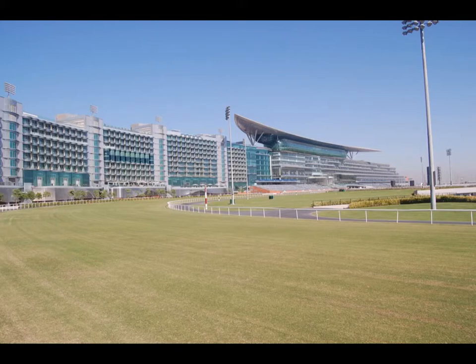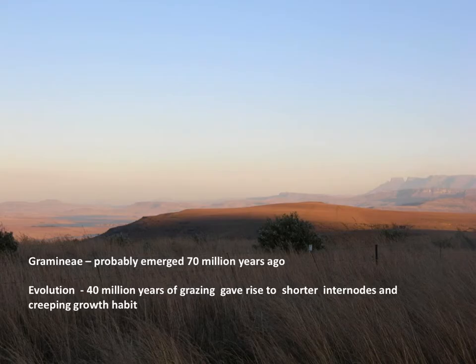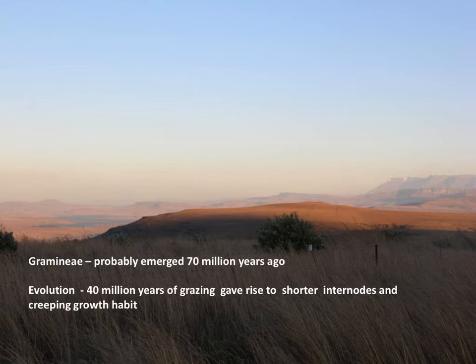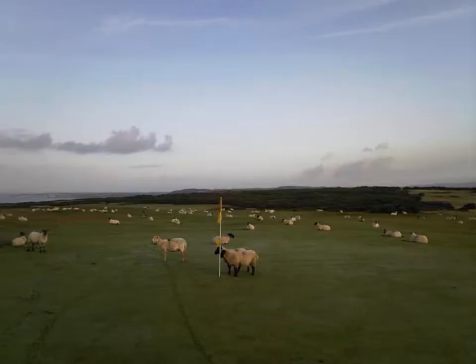Although we use the word turf, the preferred word is turfgrass. Turfgrasses are in the Gramineae family, which emerged some 70 million years ago during the Mesozoic era. Over the last 40 million years or so, grasses have been placed under selection pressure from the grazing of mammals, resulting in plants that have short basal internodes and a creeping growth habit, which became adaptive for early golf course use.